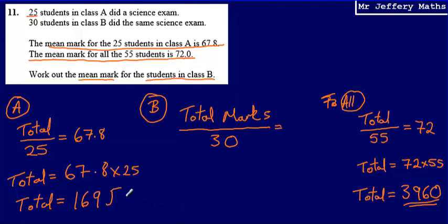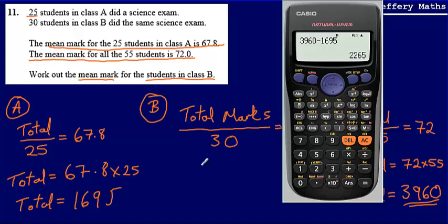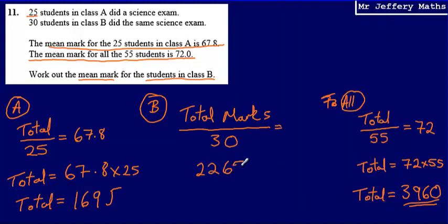Now, if I know that altogether the students' scores added up to 3,960, and the students in class A scored 1,695, I can work out what the students in class B scored. I take 3,960 and subtract 1,695, which means the marks scored by the students in class B was 2,265.